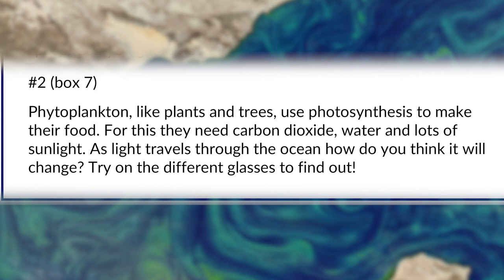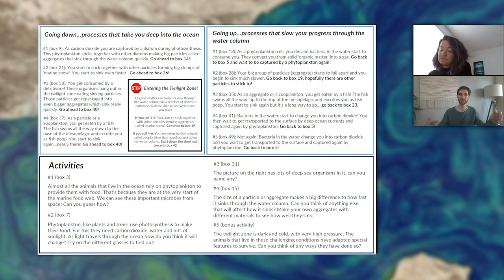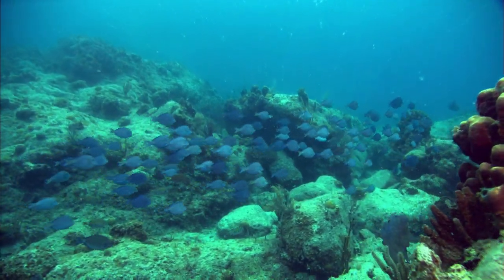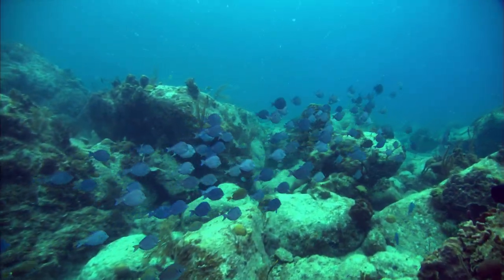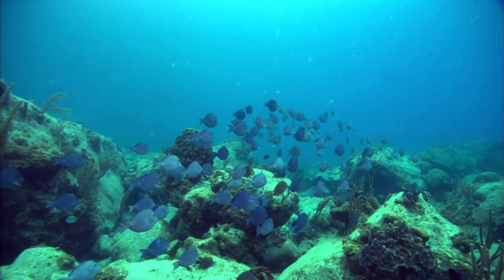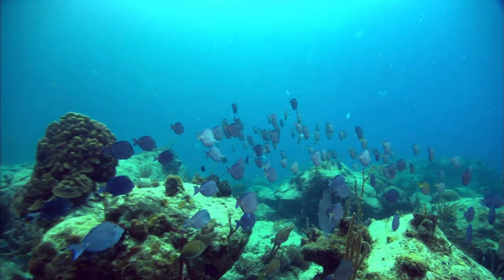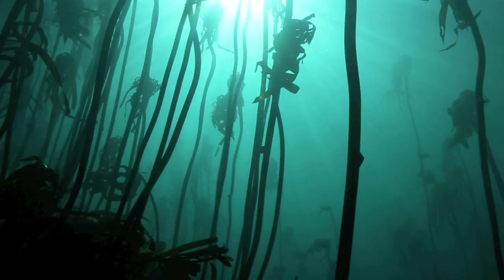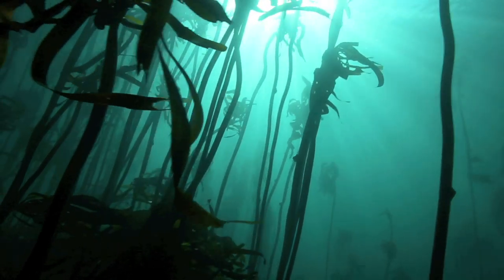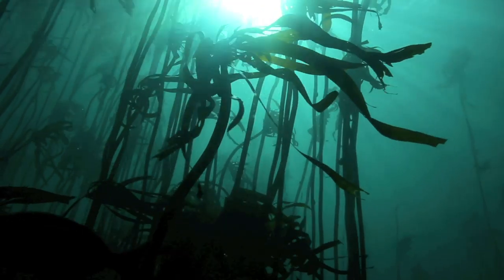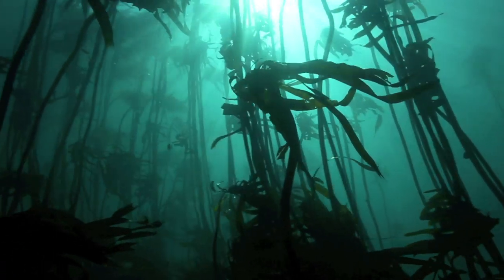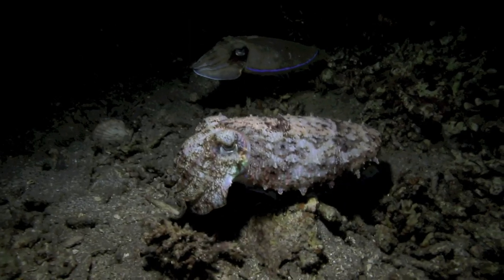The second activity talks about what phytoplankton need to photosynthesize. We're really interested in photosynthesis because that's where they capture carbon dioxide from the atmosphere — the first step to taking it down into the deep sea. Light is a really important component of photosynthesis. We talk about how light changes as you go deeper into the water column. It will start to attenuate and disappear as you get deeper — that's why you move from the photic layer at the top, where there's lots of sunlight and phytoplankton live, down to the twilight zone where there are very, very low levels of light.